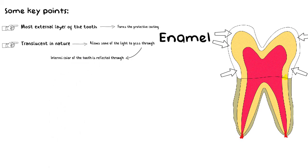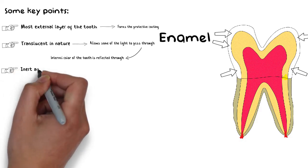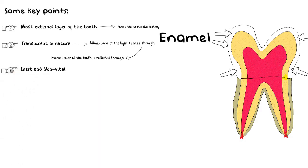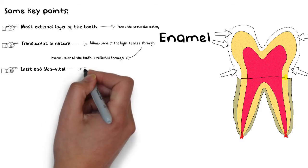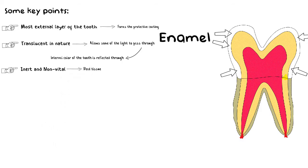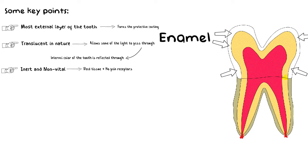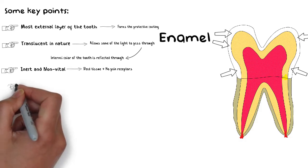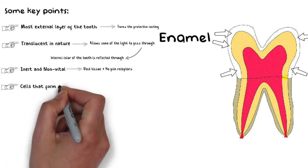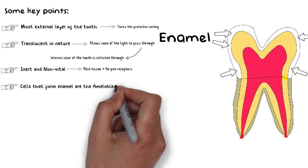Enamel is also inert and non-vital — it is actually a dead tissue. It is also insensitive, meaning it does not have any nerves, vessels, or pain receptors, and hence cannot sense pain or anything else. The pain that we feel in our teeth is actually due to some other reason which I will explain later, but it is not because of the enamel.